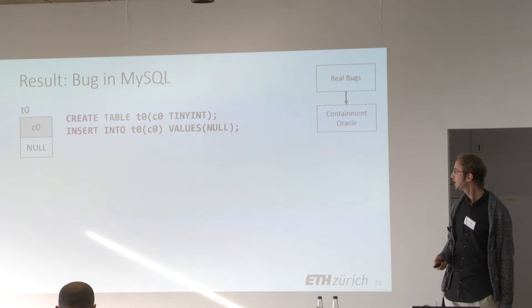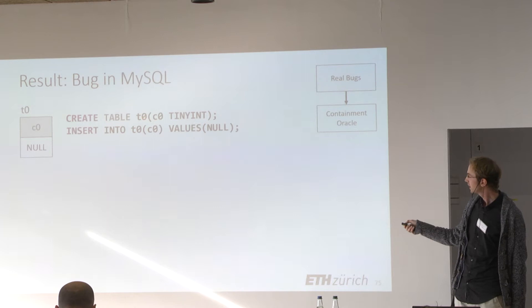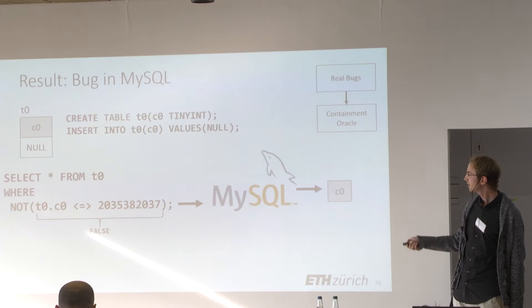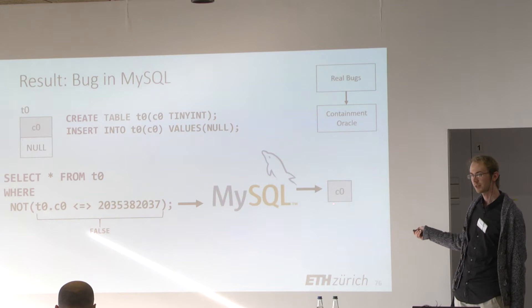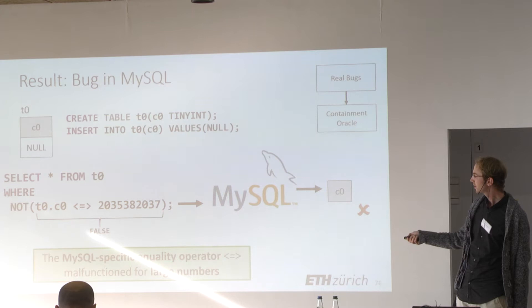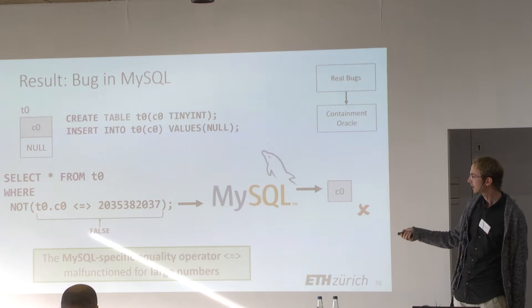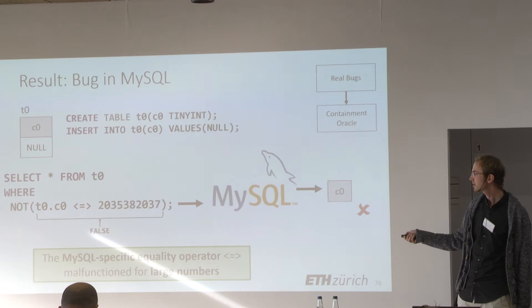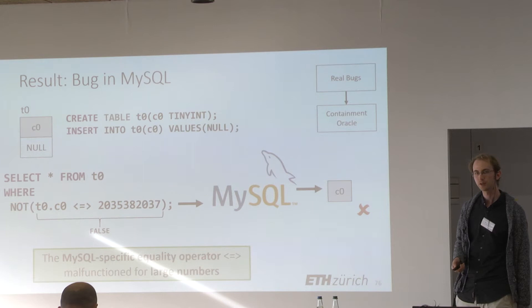Here is a MySQL example. We create table T0 and insert a null value. When we fetch all records where a condition evaluates to true, MySQL returns an empty result set. This is unexpected because MySQL's specific equality operator should evaluate to a Boolean even for null values — here it should evaluate to false since null is not equal to the integer constant, so the negation should be true. We found that for large numbers the operator malfunctioned. This bug has been fixed by the MySQL developers.